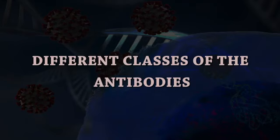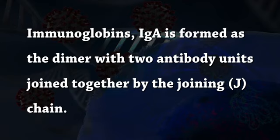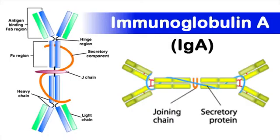B, different classes of antibodies. Immunoglobulin IgA is formed as a dimer with two antibody units joined together by the joining chain. It consists of two forms: IgA1 and IgA2. This antibody is also called a secretory immunoglobulin because it is often found in saliva, tears, and different secretory structures, providing the primary defense against pathogens.